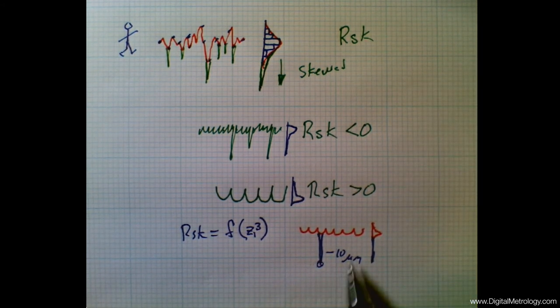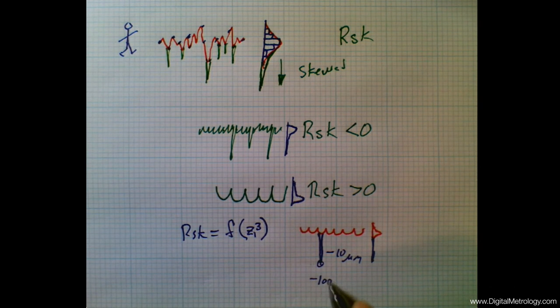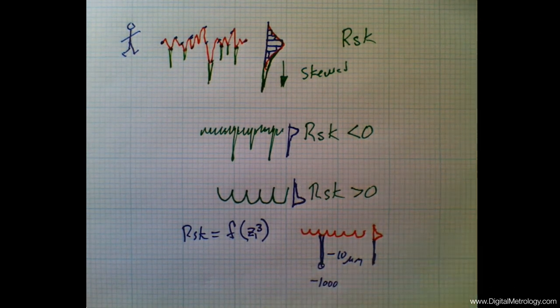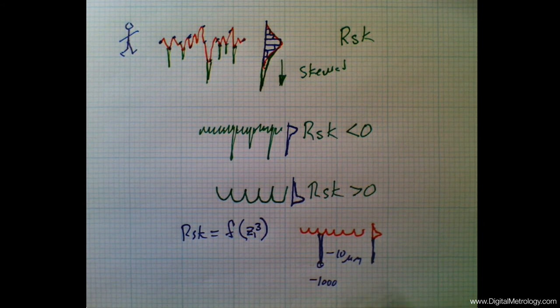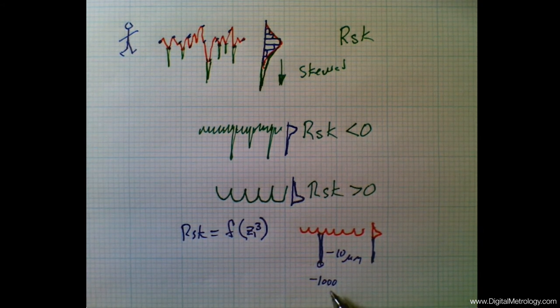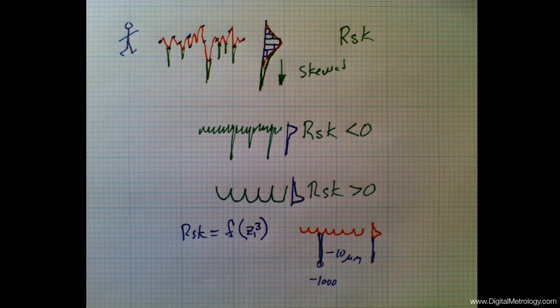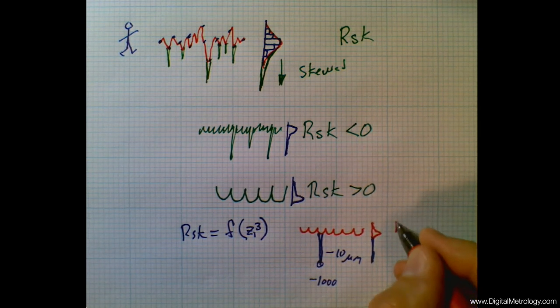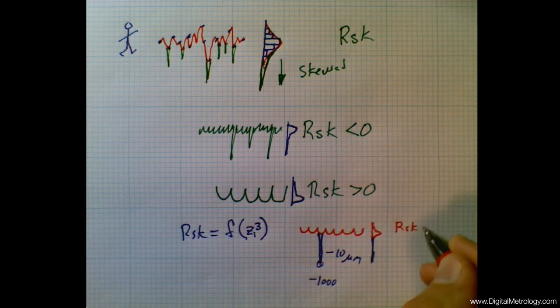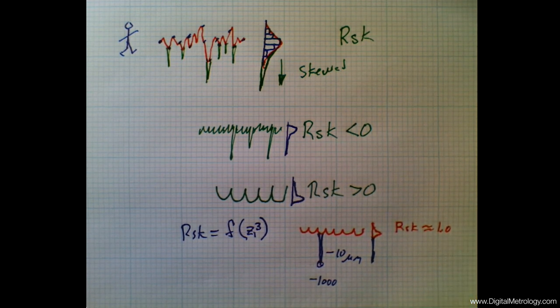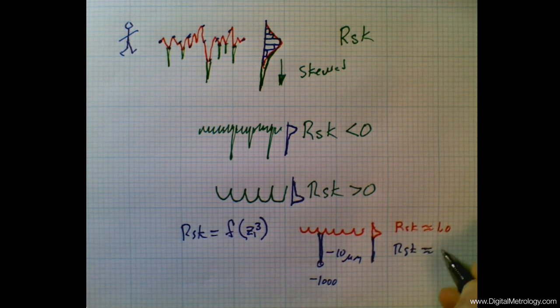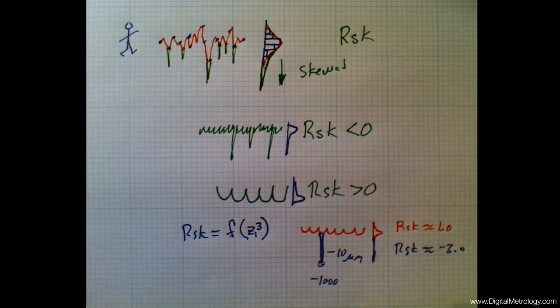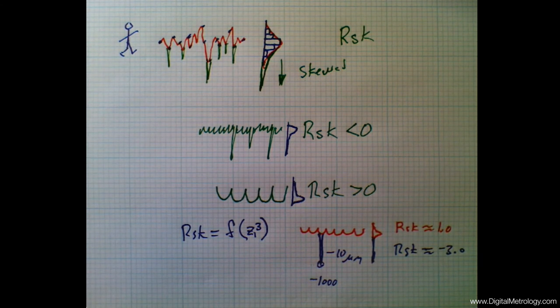If we cube negative 10, that turns into a negative 1,000 that goes into the calculation. The farther we are away from zero, the more significance this point will have in the calculation of skewness. And the surface that originally in red had an RSK of perhaps 1.0 may now have, with the blue valleys, an RSK of maybe negative 3. And this huge change in skewness due to a single scratch makes things unstable and not a good choice for production.